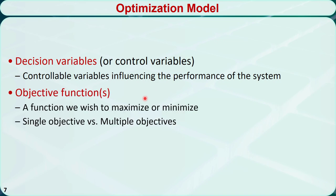An objective function is the function we wish to maximize or minimize. It is a mathematical expression that reflects the relation between the decision variables and the goal we want to achieve. If an optimization model has only one objective function, it is called a single objective optimization problem. If it has two or more objective functions, it is called a multi-objective optimization problem.